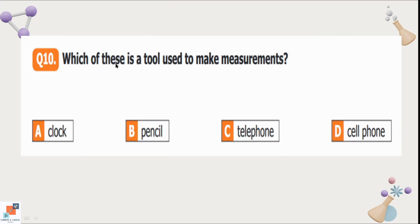Question number 10: Which of these is the tool used to make measurements? Inch tape is used to measure the length of things. Weighing machines are used to measure the weight of things. So option A is clock. Option B is pencil. Option C is telephone. And option D is cell phone. Option A is the correct option because we use clocks to measure the time. Pencil is used to write something. Telephone and cell phones are used to make calls.